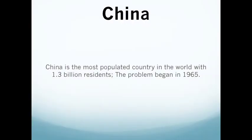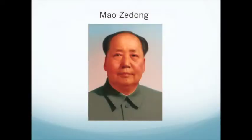China has the most population in the world, holding 1.3 billion, or 20% of the world's population. This problem began in the year 1965. It was thanks to Mao Zedong that China is having population problems. Zedong was the leader of China at the time.